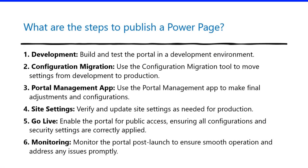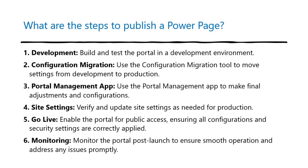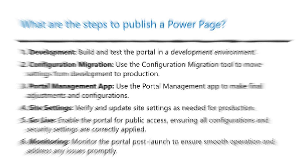What are the steps to publish a Power Page? One, development — build and test the portal in a development environment. Two, configuration migration — use the Configuration Migration tool to move settings from development to production. Three, Portal Management app — use the Portal Management app to make final adjustments and configurations. Four, site settings — verify and update site settings as needed for production. Five, go live — enable the portal for public access, ensuring all configurations and security settings are correctly applied. Six, monitoring — monitor the portal post-launch to ensure smooth operation and address any issues promptly.